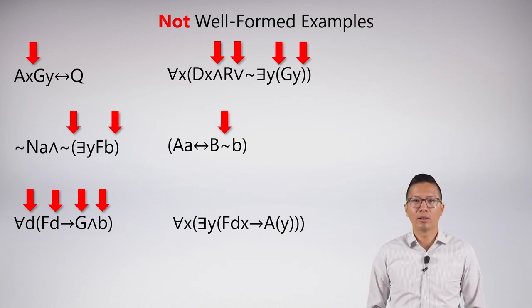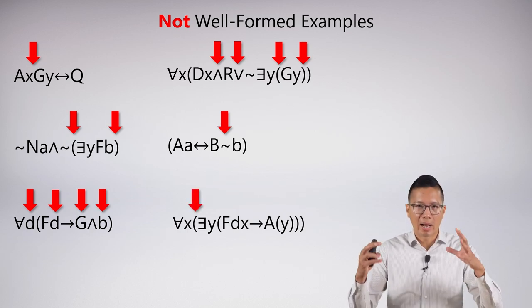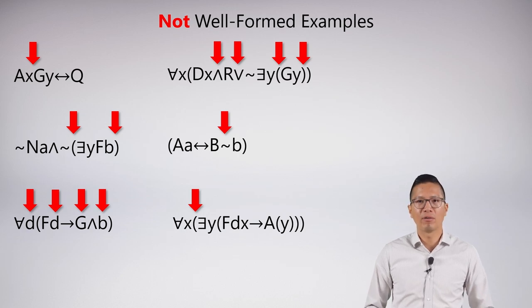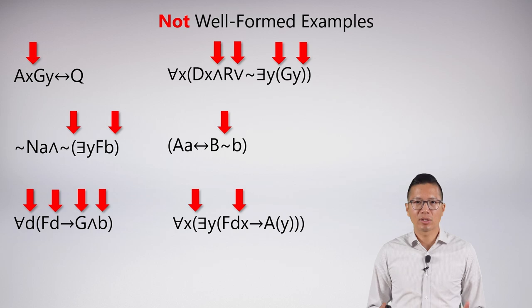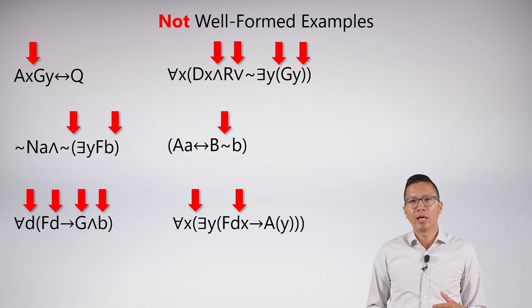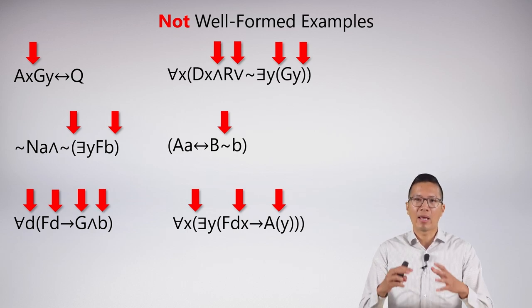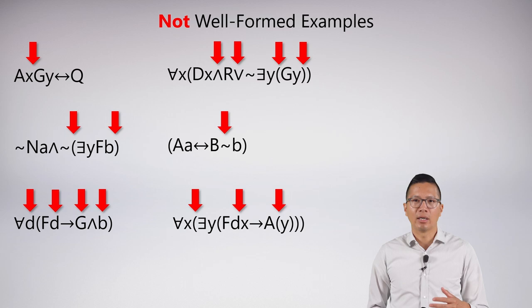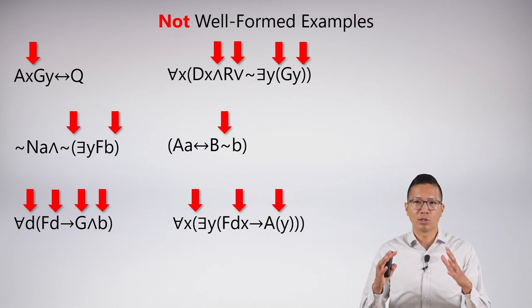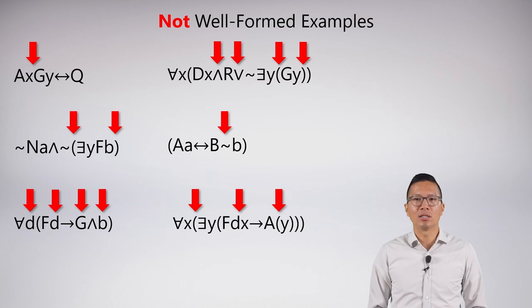Last bad example: 'for all X bracket, there exists a Y bracket, F D X arrow A bracket Y.' First, we can't have parentheses around the existential — we don't put parentheses around quantified formulas, only around things with binary connectives. Then I have two things that belong to the F predicate, but in single-place predicate logic we can only have a single thing there. Finally, we have parentheses around the Y inside predicate capital A, which we also don't do — parentheses don't go inside a predicate in single-place predicate logic.